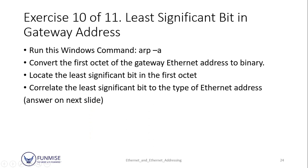Exercise 10 of 11: least significant bit and gateway address. We're going to run ARP -A, convert the first octet of the gateway address to binary, locate the least significant bit of the first octet, and then correlate the least significant bit to the type of Ethernet address.